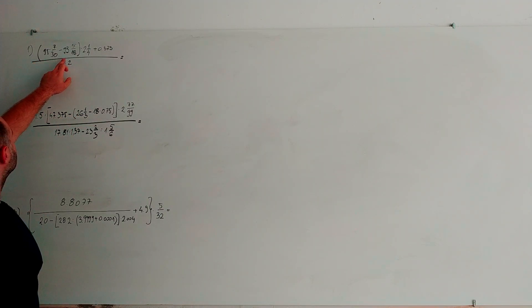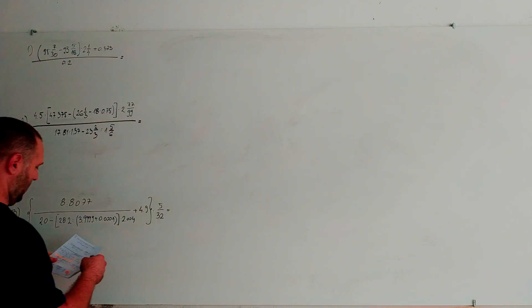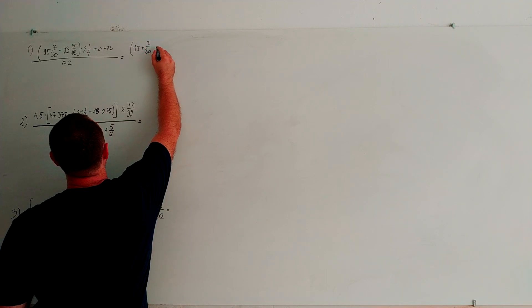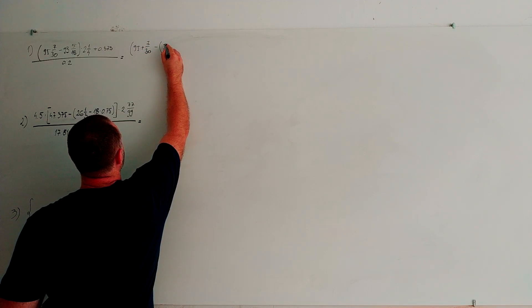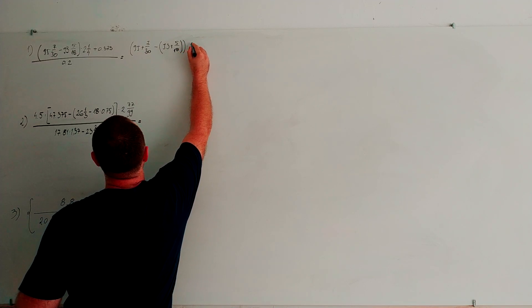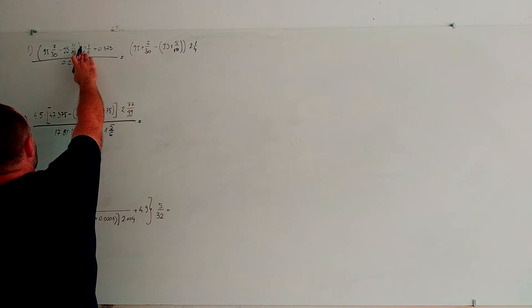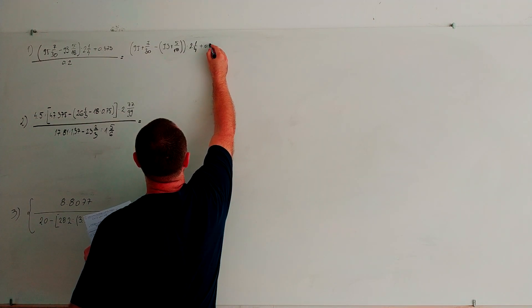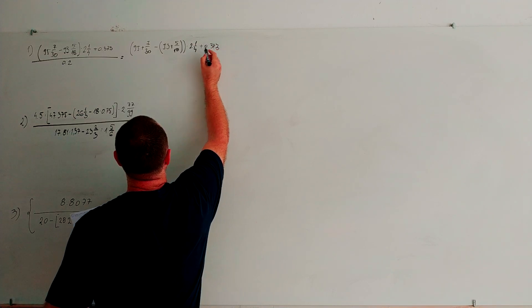Let's do that. We can write 95 plus 70 through 30 minus 93 plus 5 through 18, double brackets, multiply by 2 through 4. For now we're going to leave this as it is: 0.373 through 0.2.